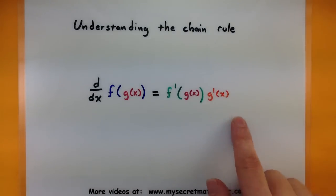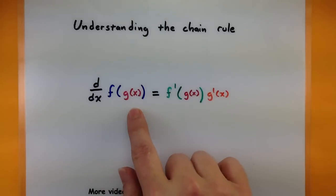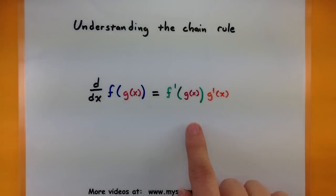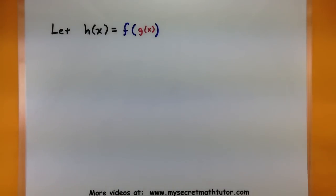Now when you first look at this rule, it doesn't seem like it makes a whole lot of sense. After all, how come you don't just take the derivative of the outside and the derivative of the inside and then call it good? Why is it that it has to be packaged up in just this way? Well, we're going to explore that question, and after we're done, you'll see exactly why it has to be packaged up that way, and hopefully it'll make a lot more sense.